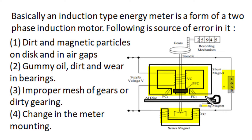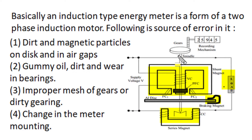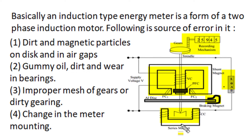The rotating disk experiences braking when it rotates across the brake magnet, and this braking torque is proportional to the angular velocity of rotation. In equilibrium, when driving torque and braking torque become equal and opposite, the rotation speed of the disk becomes proportional to power flowing through the meter. When we measure the number of rotations using a registering and counter mechanism, that measurement becomes proportional to the amount of energy flowing through the meter, giving direct energy results in the decimal counter.